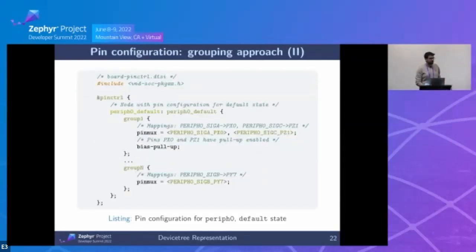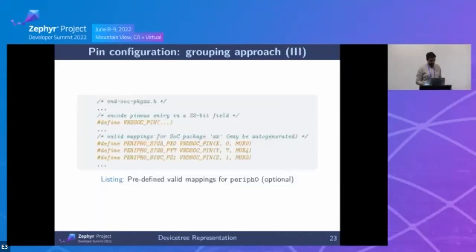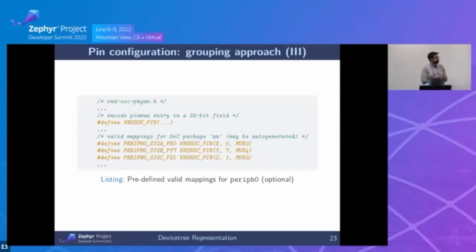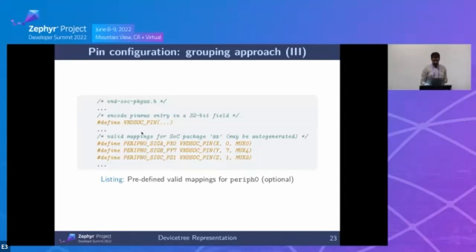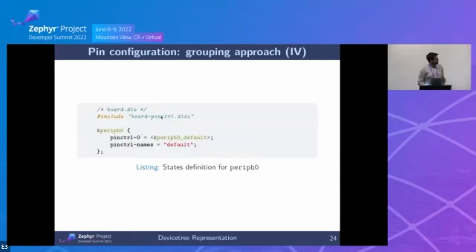Some vendors predefine valid combinations with entries like these — this is optional. For Nordic, where you have freedom to choose any pin for any peripheral, it doesn't make sense; you just code the pin number. But for vendors like Gigadevice or Raspberry Pi where each pin has a fixed set of valid combinations, providing predefined combinations makes life easier for developers. The state is assigned to a peripheral via the `pinctrl-0` property referencing the node describing the peripheral default configuration, with `pinctrl-names` set to 'default'.